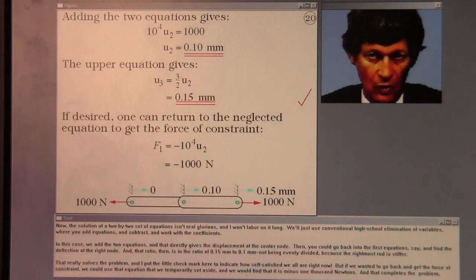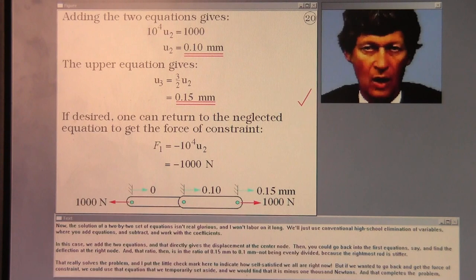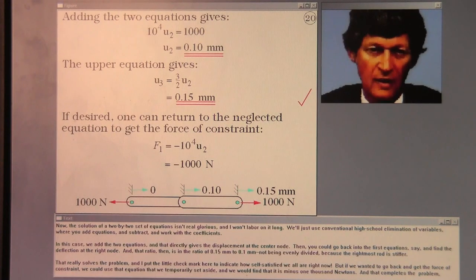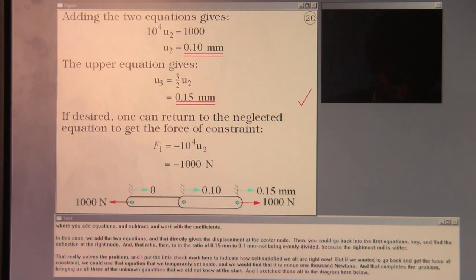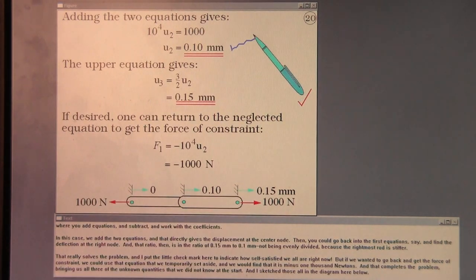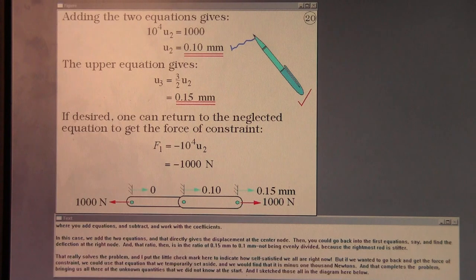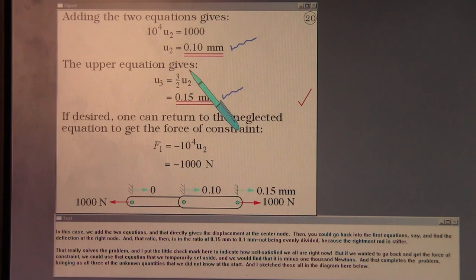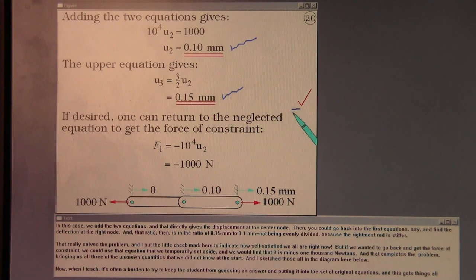Now, the solution of a two-by-two set of equations isn't real glorious and I won't labor on it long. We'll just use conventional high school elimination of variables where you add equations and subtract and work with the coefficients. In this case, we add the two equations and that directly gives the displacement at the center node. Then you could go back into the first equation and find the deflection at the right node. And that ratio is in the ratio of 0.15 millimeters to 0.1 millimeters, not being evenly divided because the rightmost rod is stiffer. That really solves the problem and I put the little check mark here to indicate how self-satisfied we all are right now.